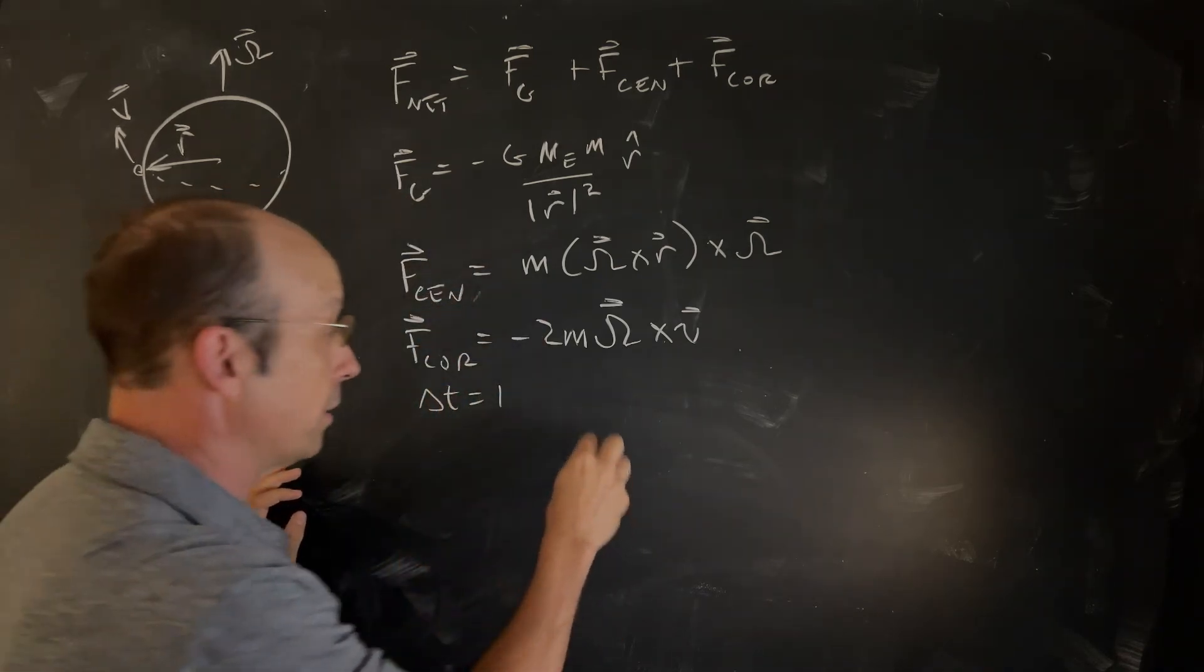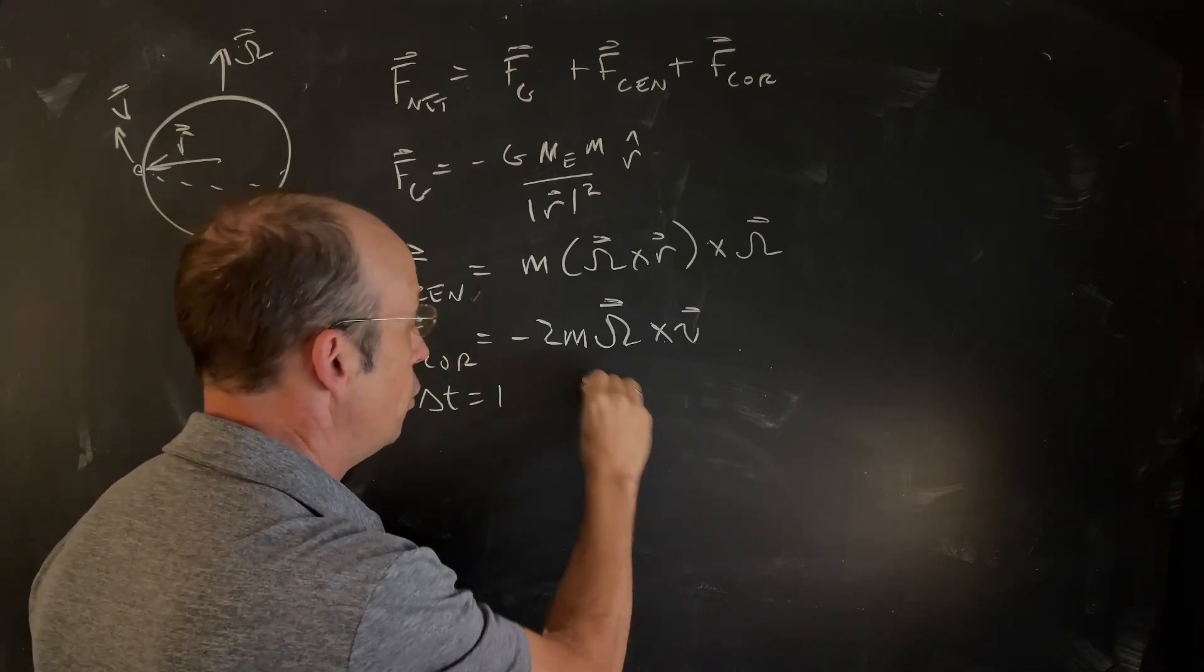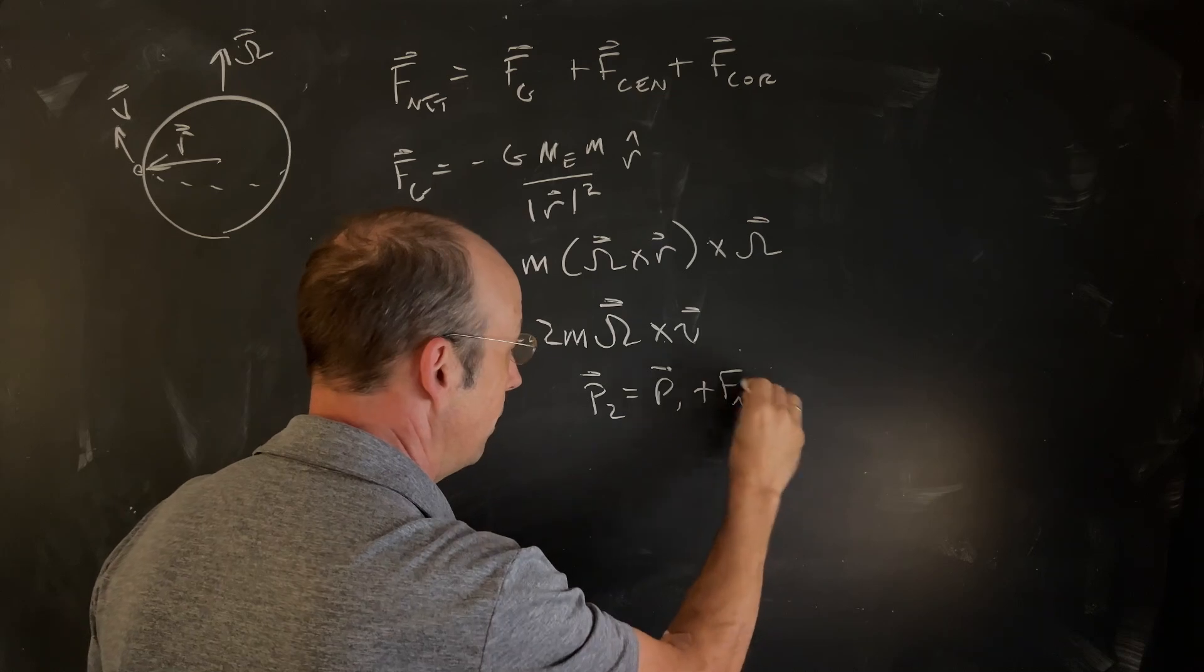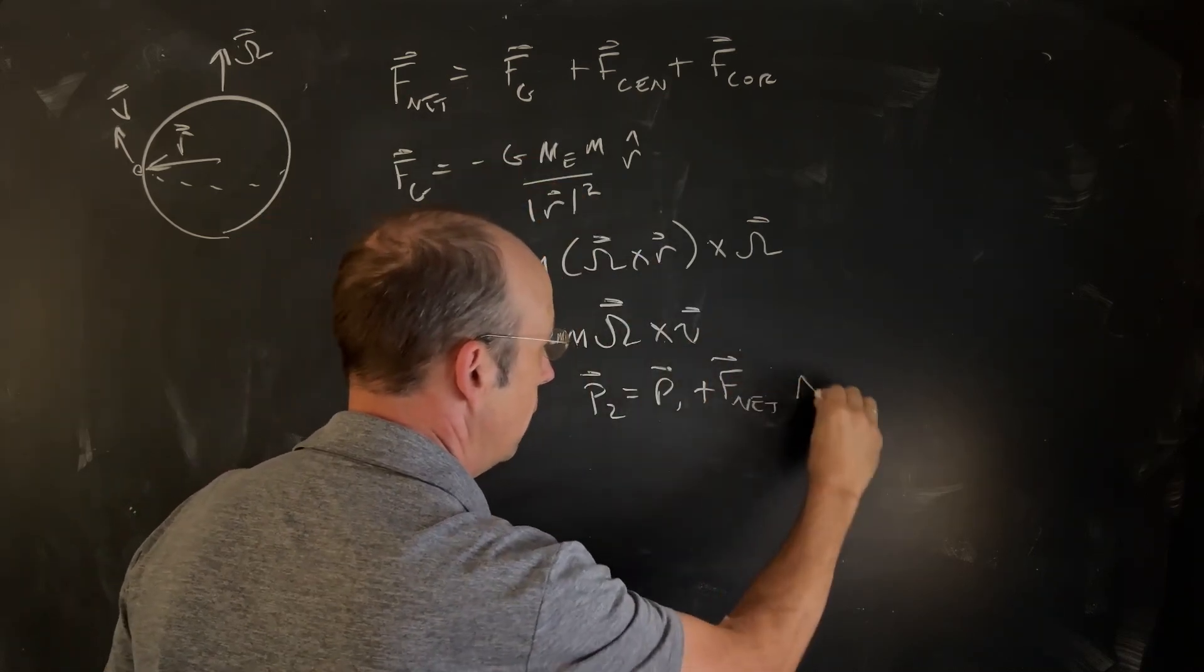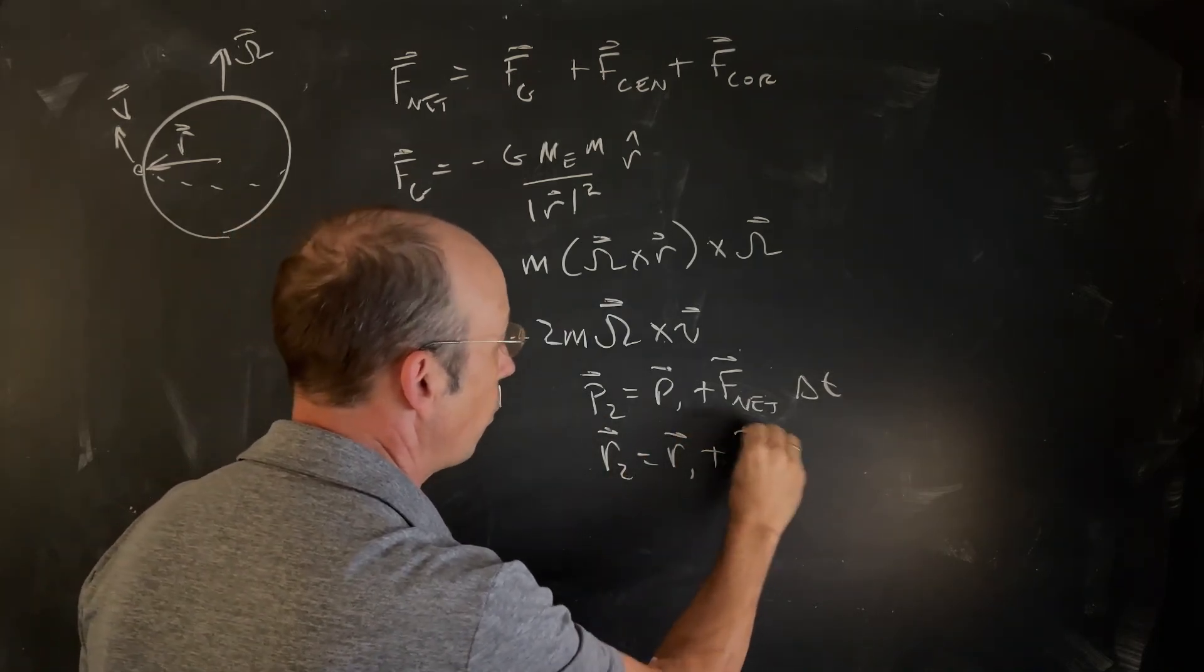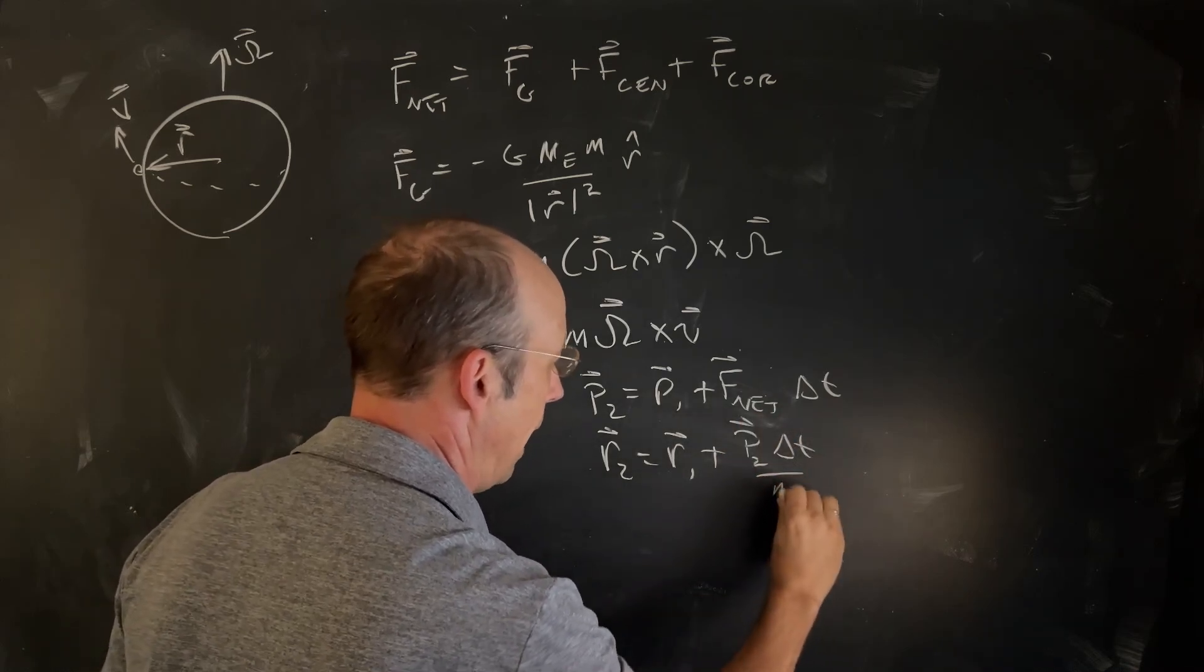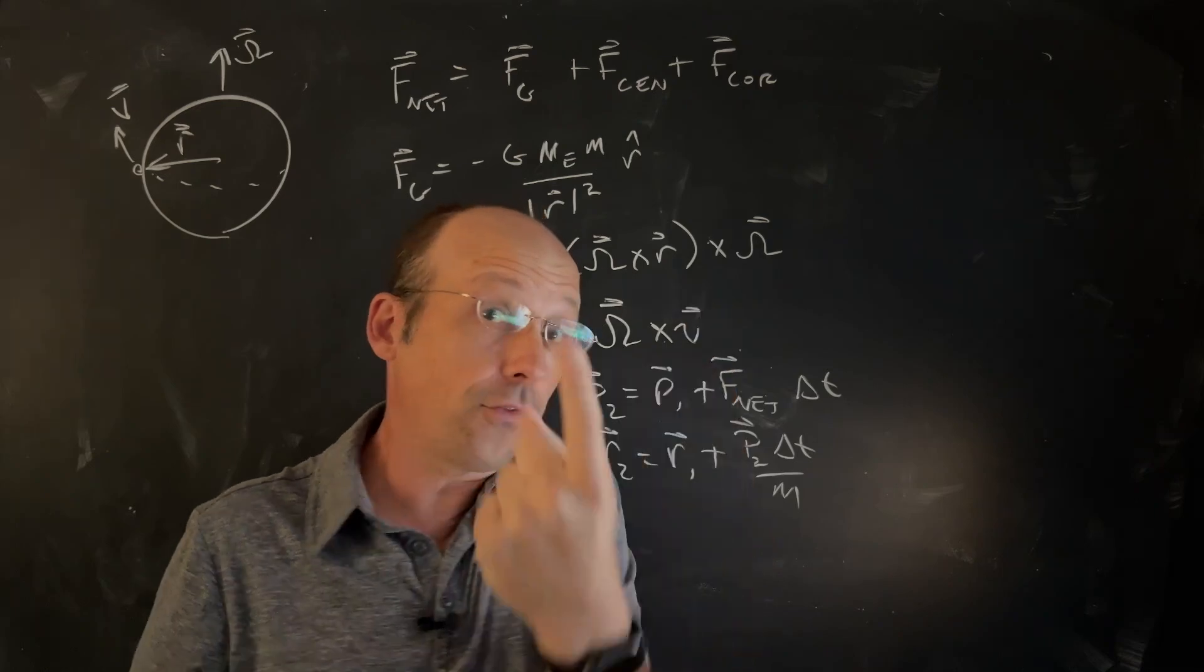During each of those time intervals, we can assume the force is constant. So we can update momentum: p2 equals p1 plus Fnet delta t. Then we can update the position: r2 is r1 plus p2 delta t over the mass. And then we'll update time, and we'll do that again and again and again.